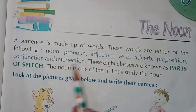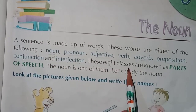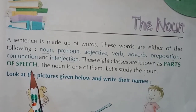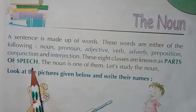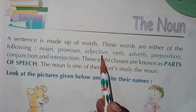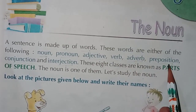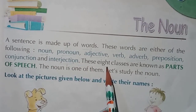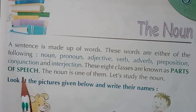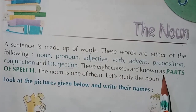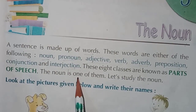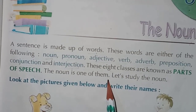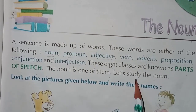Dear students, these eight classes are known as parts of speech. Inko parts of speech kehte hain — noun, pronoun, adjective, verb, adverb, preposition, conjunction and interjection. Clear? These eight classes are known as parts of speech. And among them, the noun is one of them. Noun bhi ek hai. Let's study the noun.